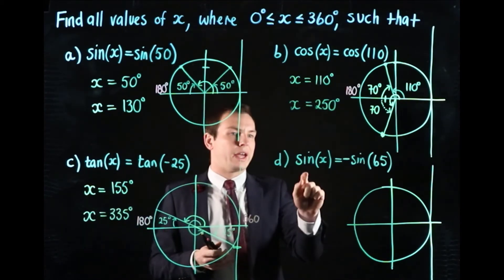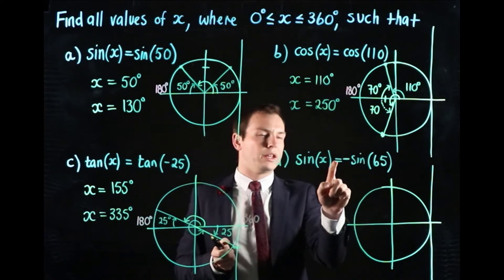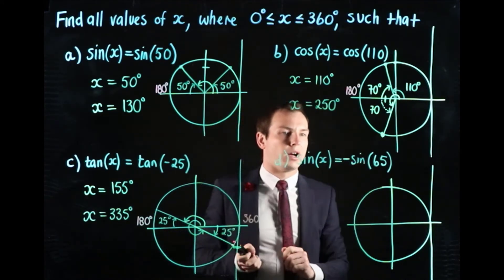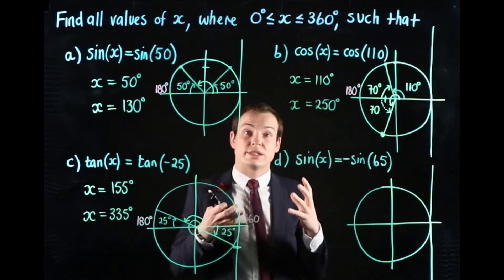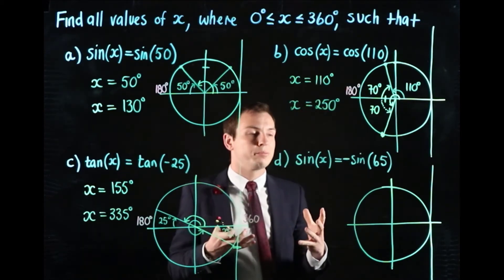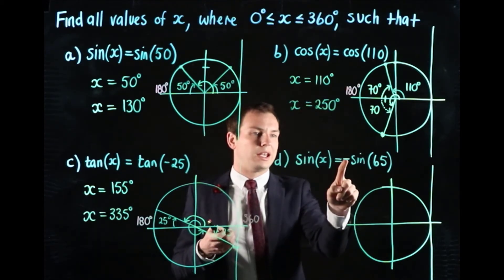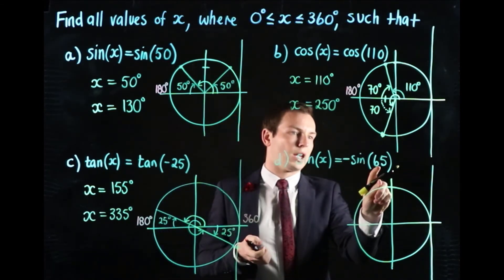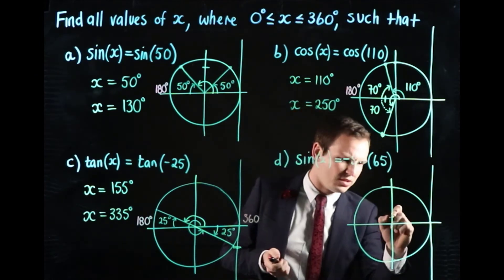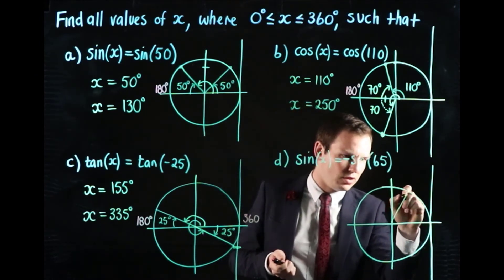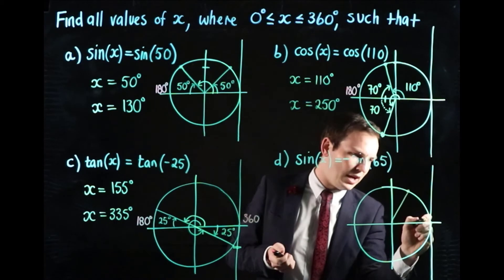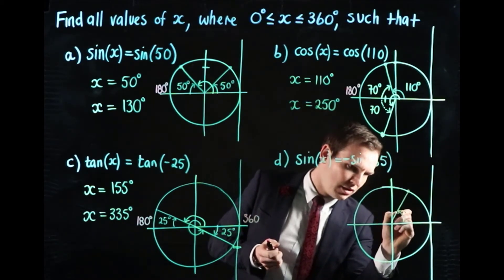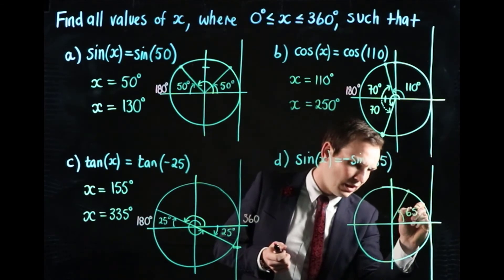Now for part d, we have sin(x) equals, and this is where it changes from the other three, negative sin of 65. We're going to do a similar thing to what we've been doing before, but we now need to deal with this negative as well. We're still going to locate 65 degrees, which is pretty close to 60, about two thirds of the way around that arc in the first quadrant. So that angle there must be 65 degrees.